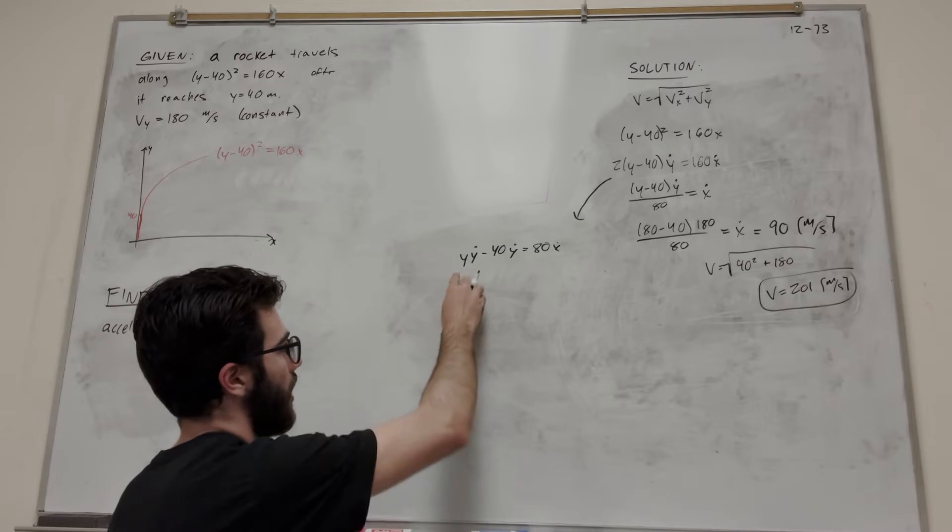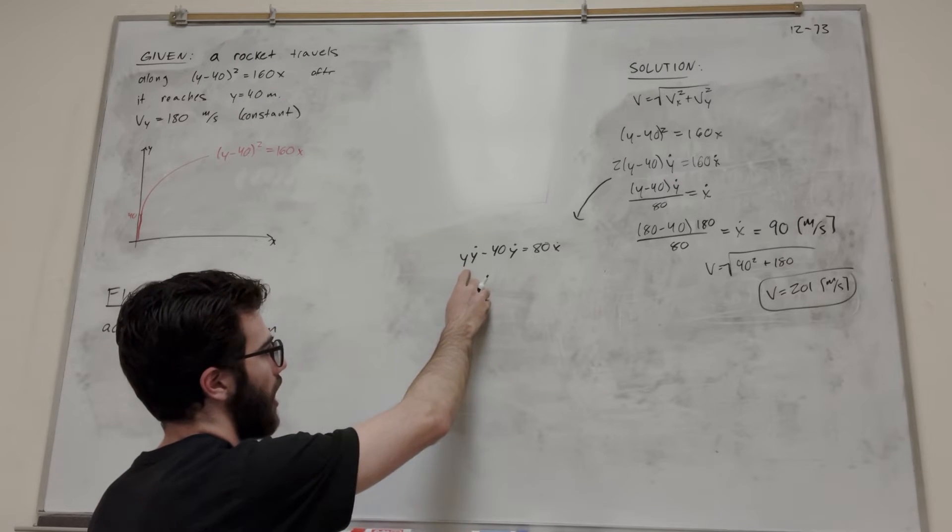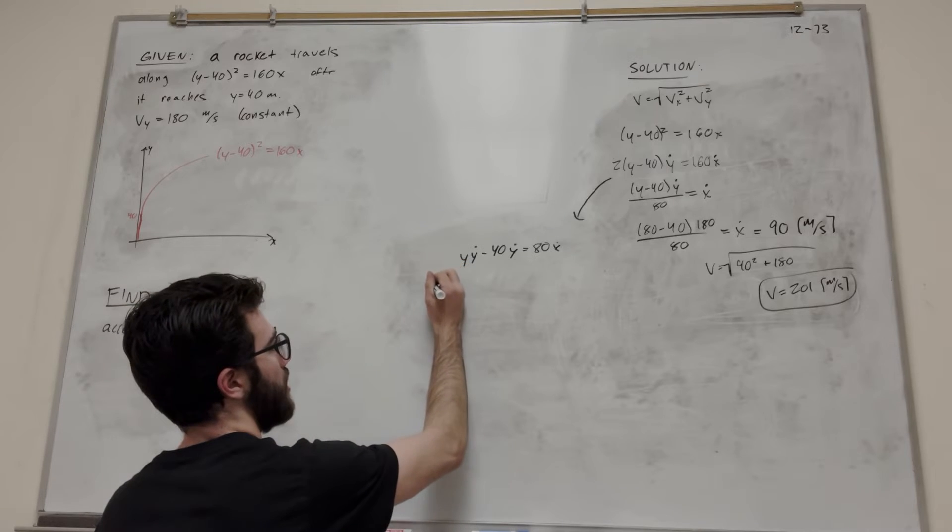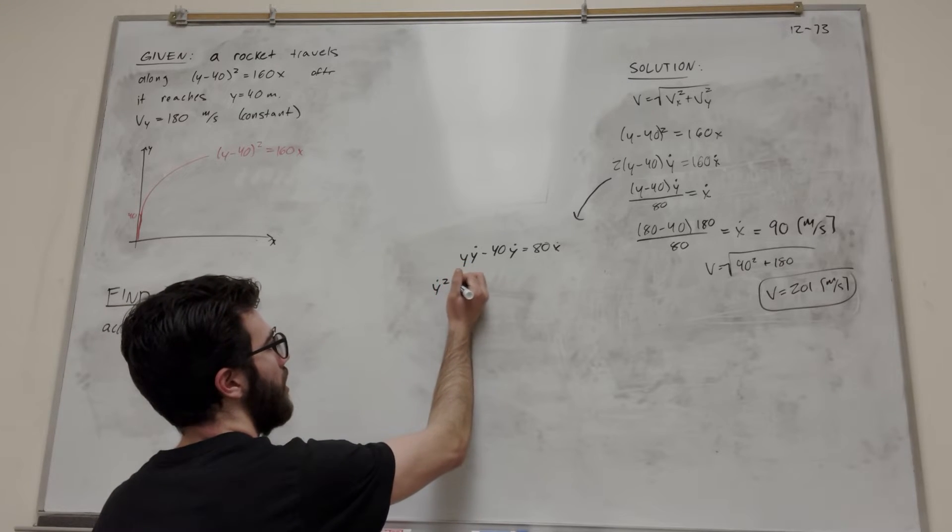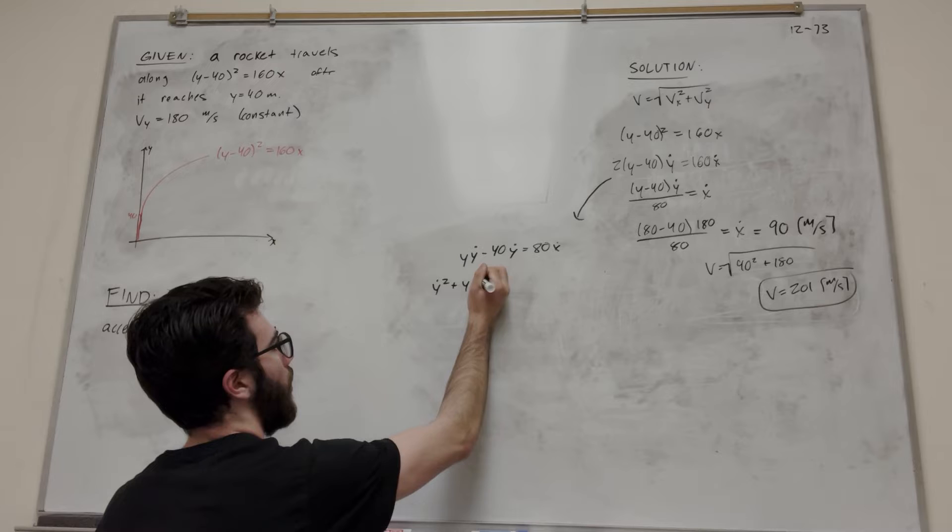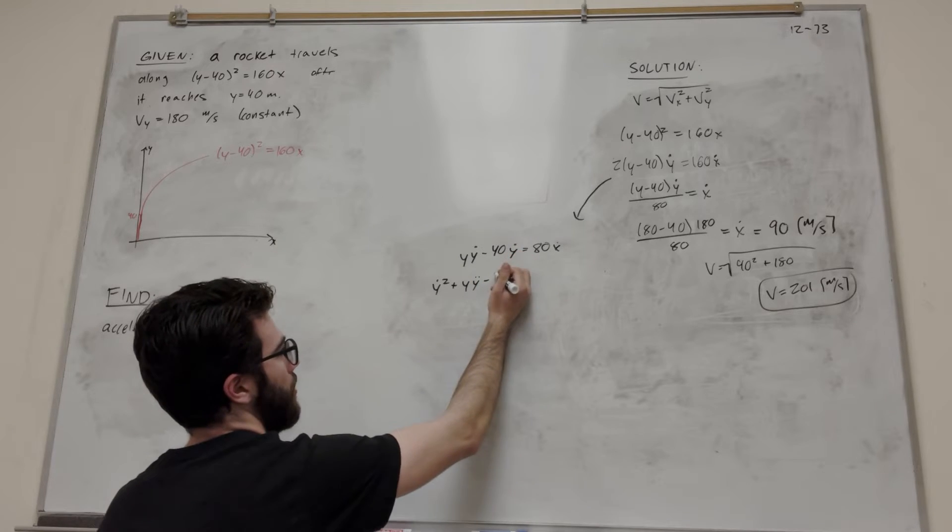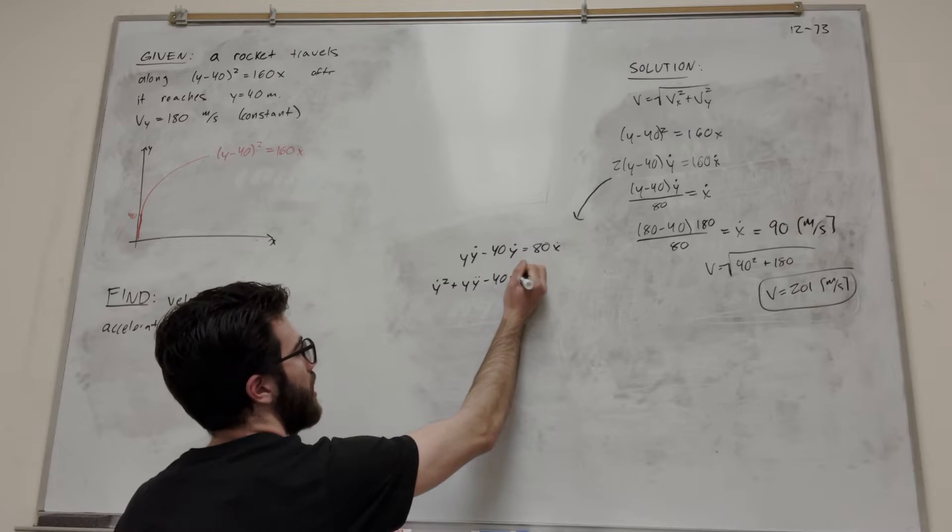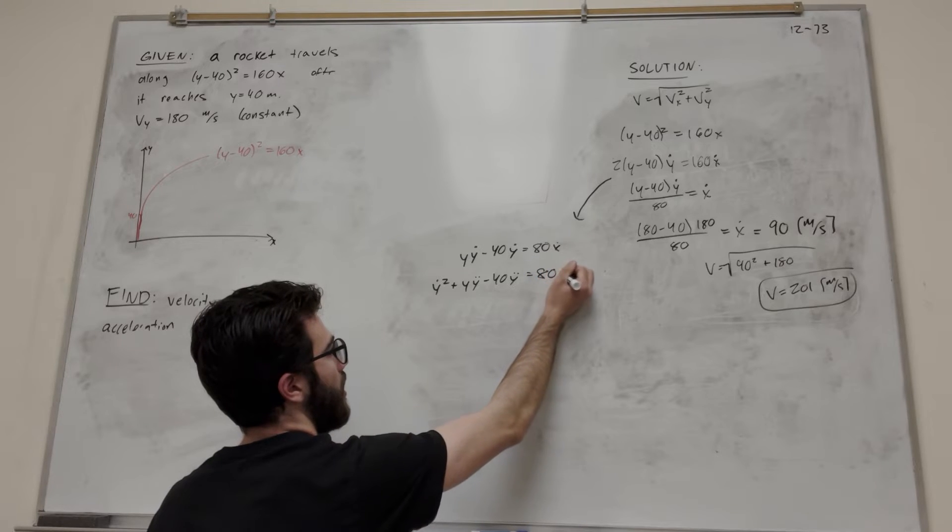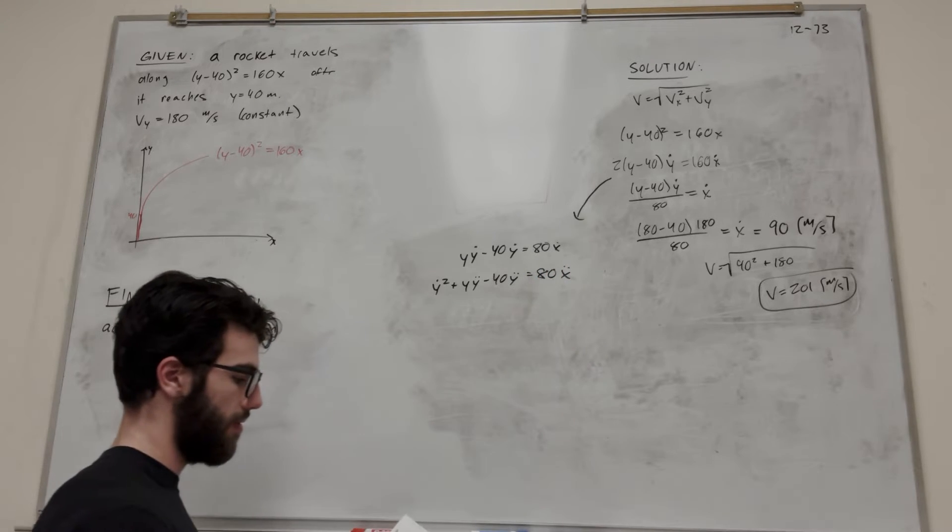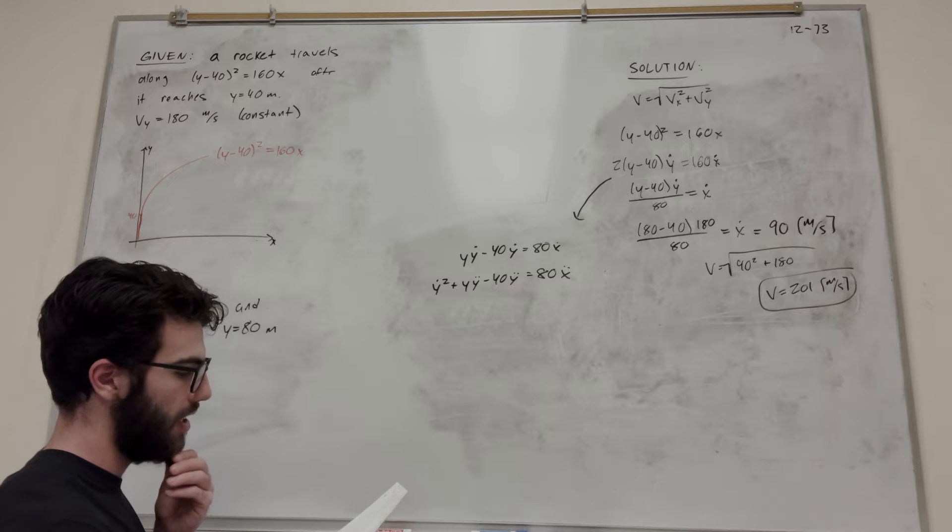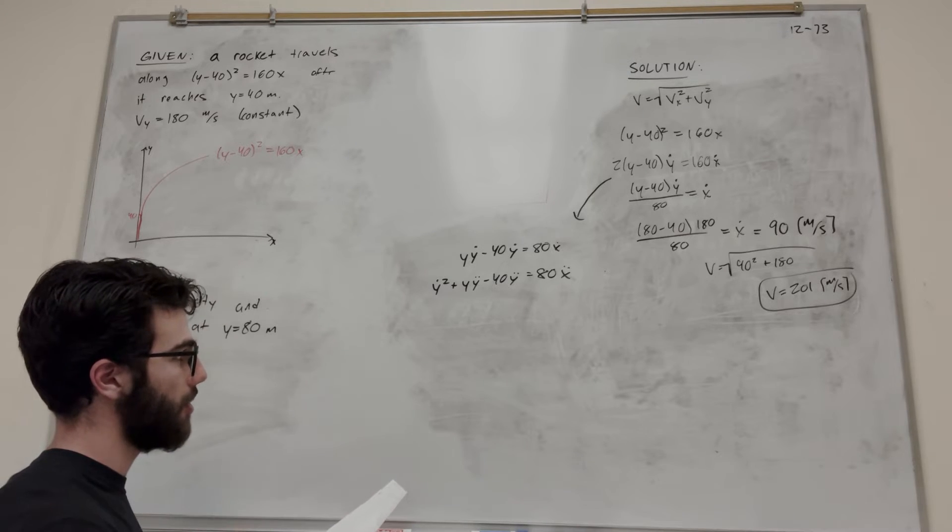This is going to be a little bit longer because we have the product rule. To start this product rule, this becomes y dot squared plus y times y double dot, this becomes minus 40 y double dot, and this becomes 80 x double dot. So we're here now.